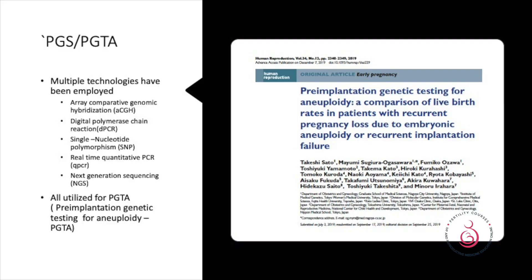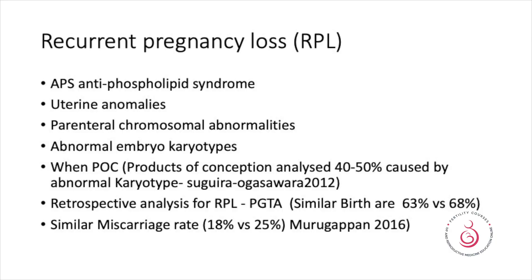This paper, published in 2019, throws light on this subject. When you look at recurrent pregnancy loss, there are multiple causes: antiphospholipid syndrome, uterine anomalies, parental chromosome abnormalities, and embryonic chromosome abnormalities. When products of conception were analyzed, about 40 to 50 percent of embryonic miscarriages are caused by abnormal karyotype. So what happens to the other 50 percent?